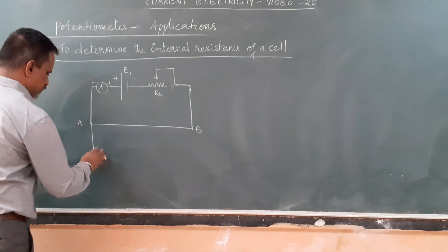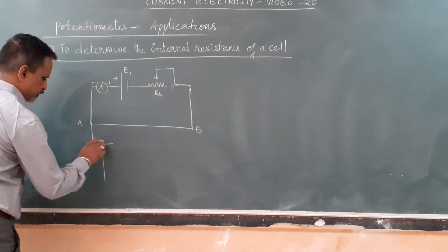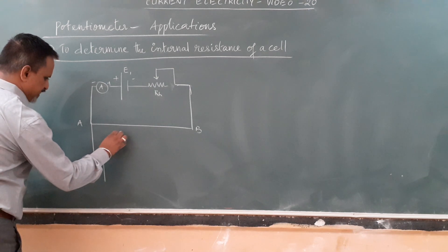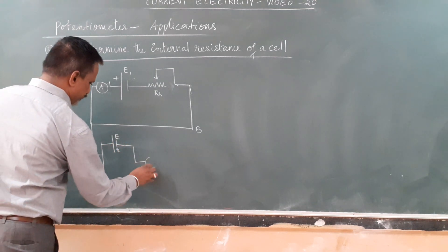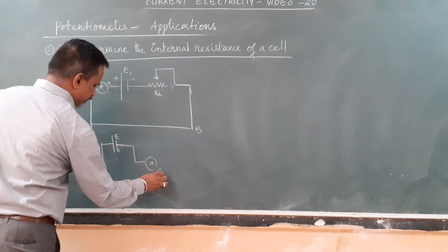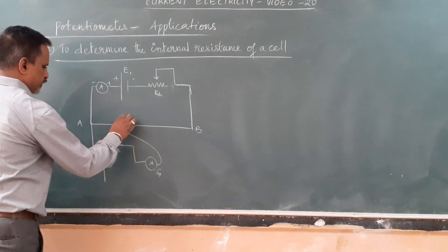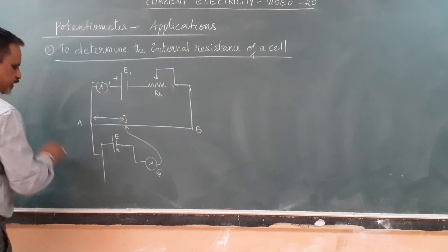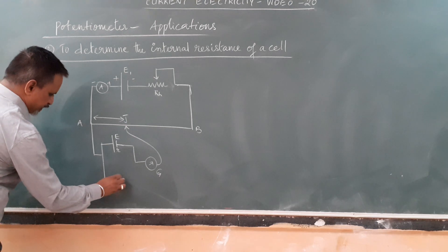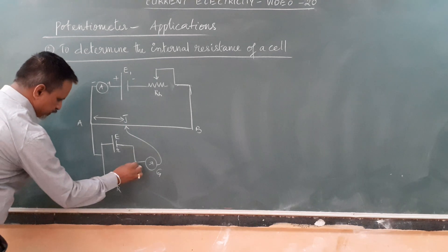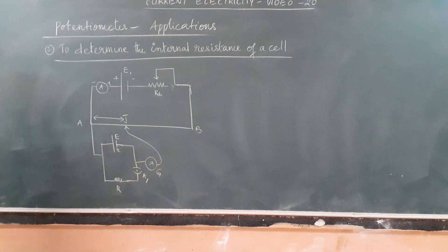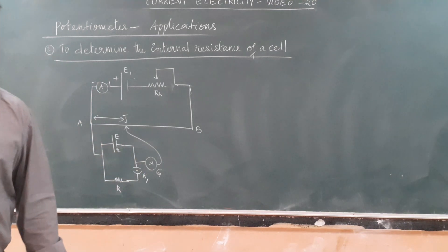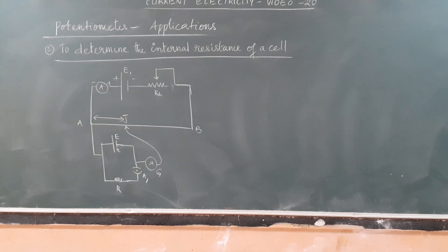In the secondary circuit, we have a cell of EMF with internal resistance r, connected to a galvanometer and then to the jockey. This gives the balance point. Parallel to the cell, we connect an external resistance R and a key K1. This is the complete circuit diagram to determine the internal resistance of a cell.